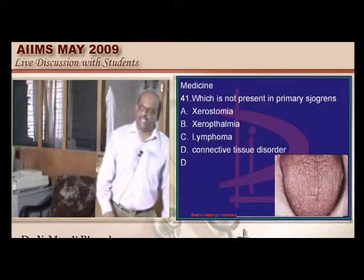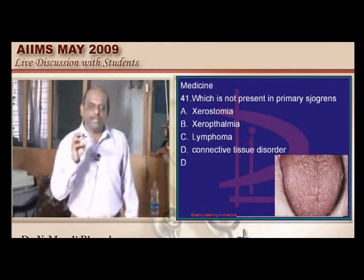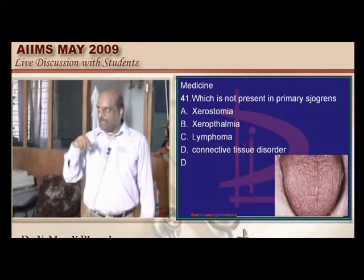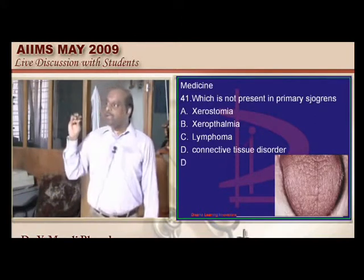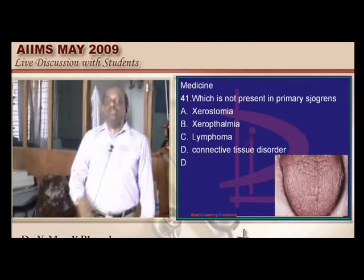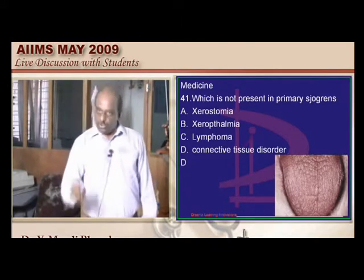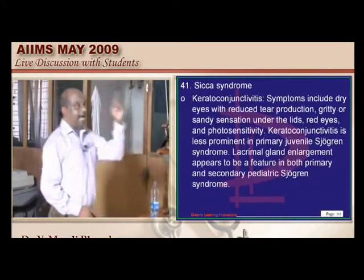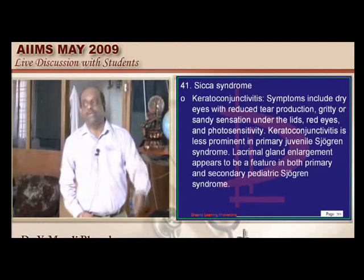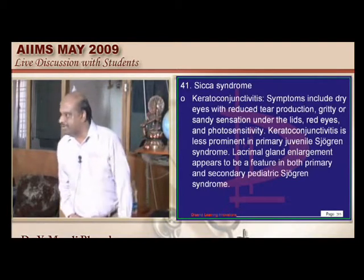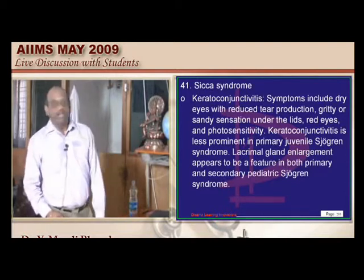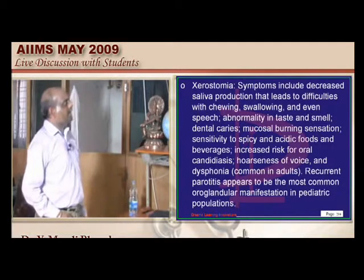In primary Sjögren's, lymphocytes destroy the exocrine glands — the lacrimals and the salivary — leading to drying of the mouth (xerostomia) and drying of tears (xerophthalmia). This lymphocyte infiltration can predispose to lymphoma in Sjögren's. The connective tissue disorder associated with Sjögren's is rheumatoid arthritis. If Sjögren's has association with rheumatoid arthritis, SLE, or MCTD, it is no more called primary Sjögren's — it is called secondary Sjögren's.